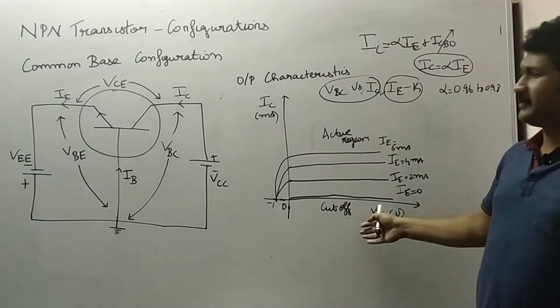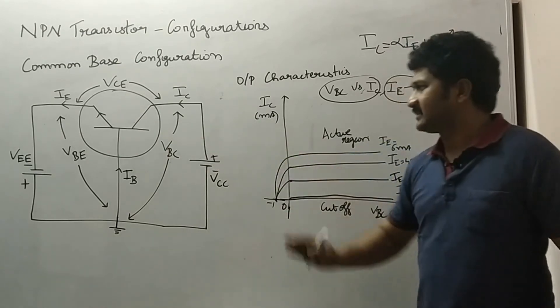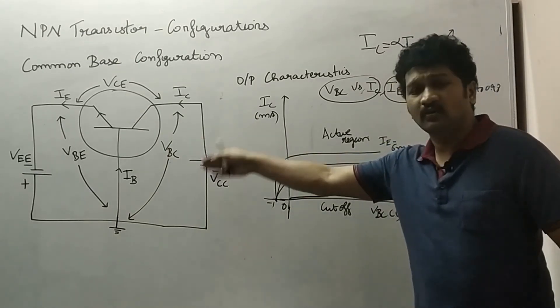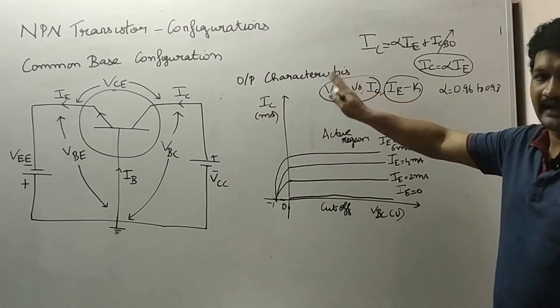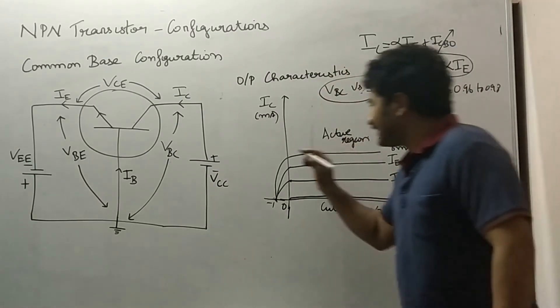In cutoff region, what happens? Base emitter is reverse biased, and base collector is also reverse biased, so there will be no collector current. Collector current will be our output as usual.